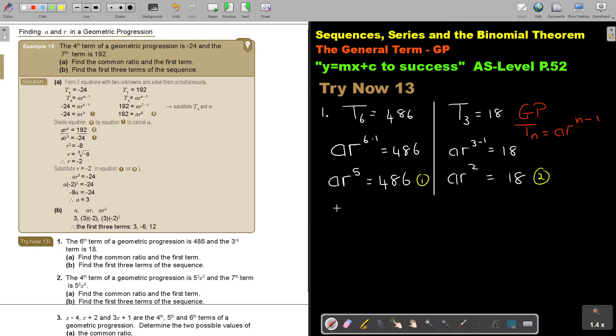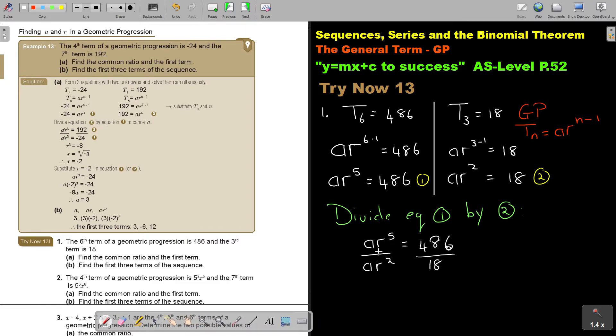So, again, we can say divide equation, which one is the biggest one? 1 by 2. And if we do that, we're going to say A or just put the big one on top. So, if I divide, the A's cancel, I subtract the exponents, and if I say 4, 8, 6, basically there, divide by 18, and that will give me 27. And then, if I take the cube root, I get 3.